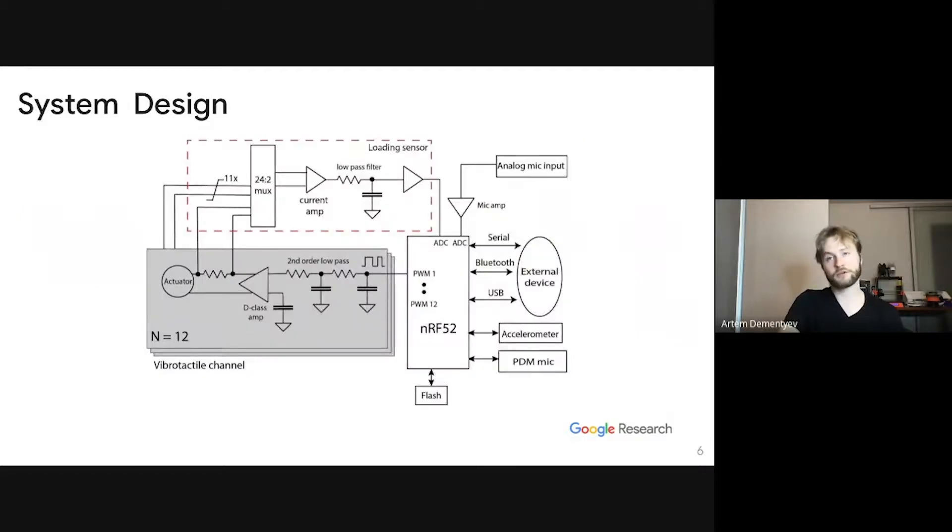Our platform is based on NRF52 microcontroller and Bluetooth transceiver. Each vibrotactile channel is driven by pulse-width modulation independently, and we use a low-pass second-order filter to convert it to analog, and that goes through the D-class amplifier to the actuators. We have resistors in series with each analog channel to measure the current, which allows us to sense the loading. The measurement is routed to a multiplexer so we can use only one current amplifier for all channels because they are quite power hungry. We also have various sensors such as onboard microphone, analog microphone, digital, and accelerometer.